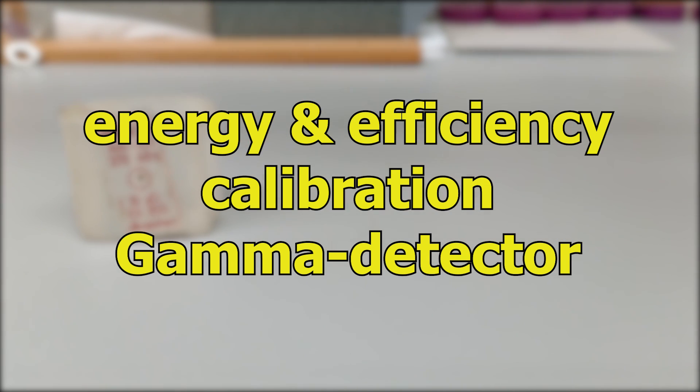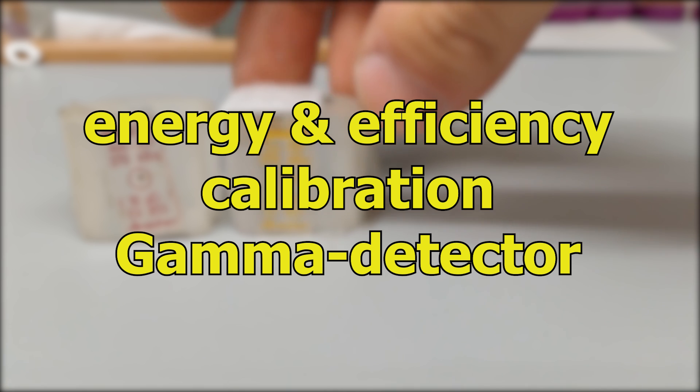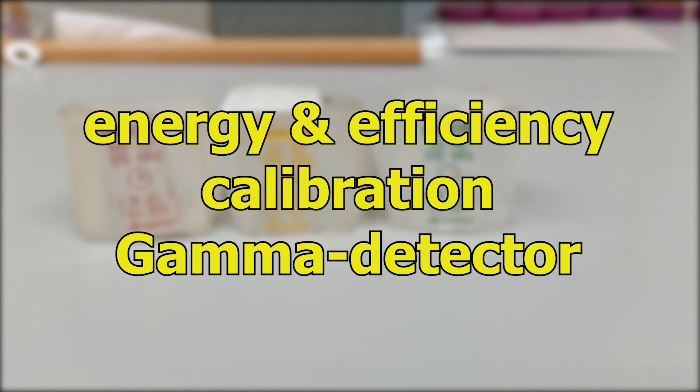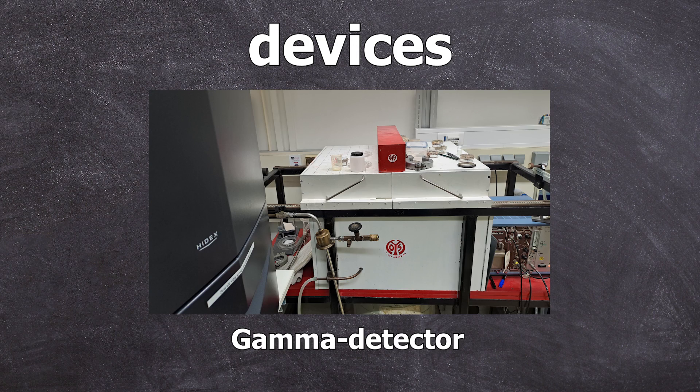Today, we are calibrating for the energy and efficiency of the gamma detector. The gamma detector is based on a germanium crystal doped with lithium, which is why it's often referred to as the GeLi. This calibration process is done entirely on the computer and no chemical reactions are involved in this video.